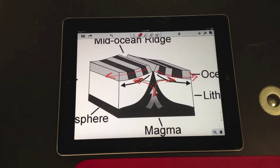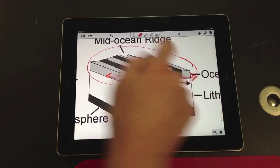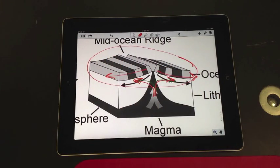And this process happens about the rate that your fingernails grow, so pretty slowly. And the pattern that we're looking at here, this pattern, is something that we're going to work with with our magnetic field sensors.